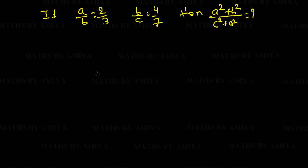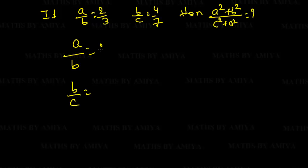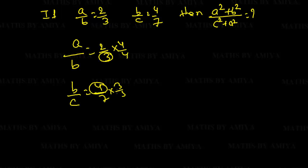Let's solve a question. If A/B = 2/3 and B/C = 4/7, find A² + B² upon C² + A². I would say pause the video and solve the question. We just need to merge the ratios A/B and B/C. A/B is 2/3 and B/C is 4/7. B is 3 in the first ratio and 4 in the second, so we multiply by 4 in the first and by 3 in the second to equate B.